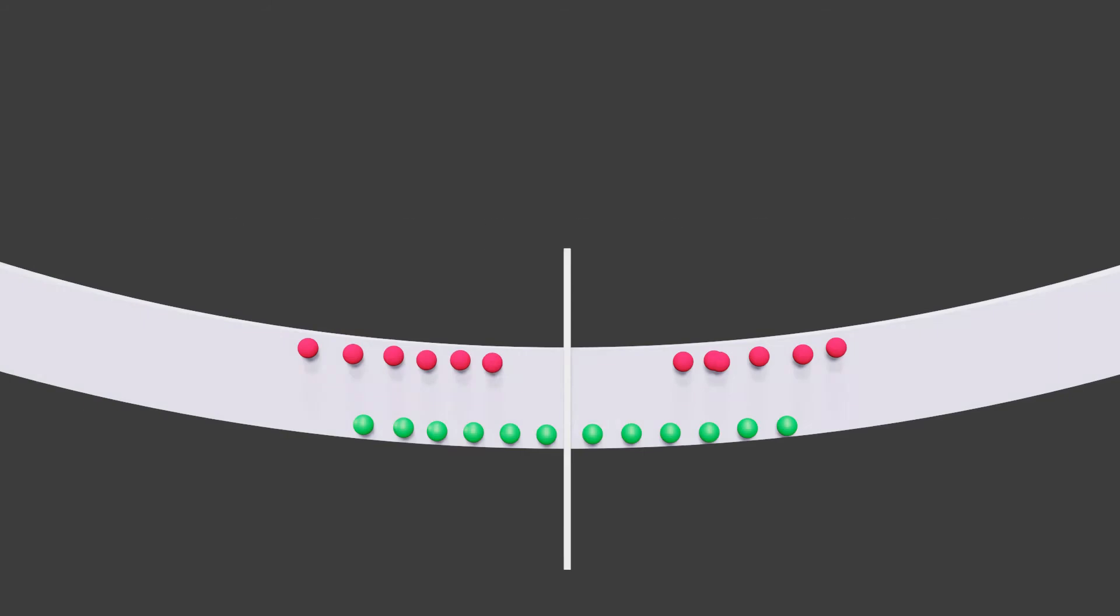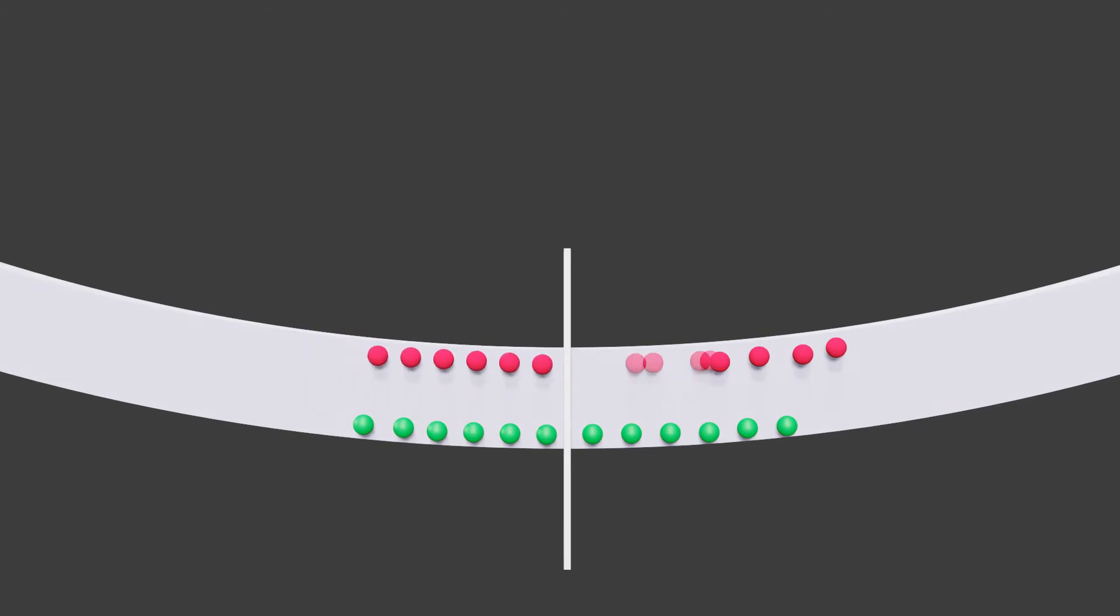If we talk about the simple reinforced beam, if load is applied on that beam—if it is a simply supported beam—then compressive stress is generated at the top of beam and tensile stress is generated at the bottom.